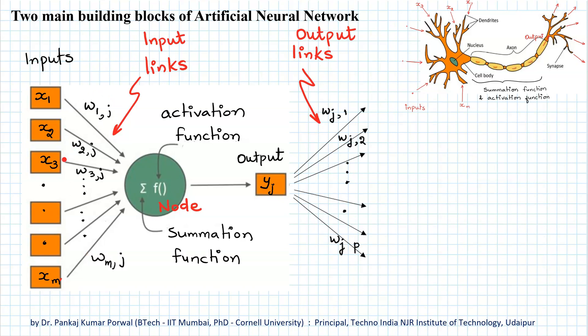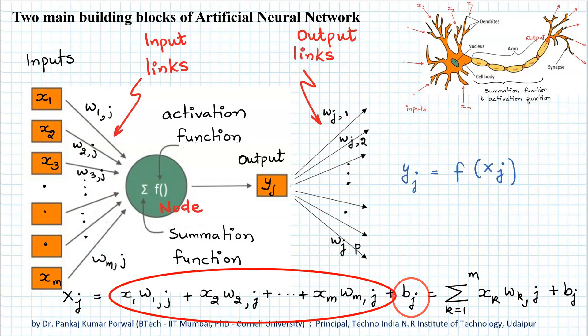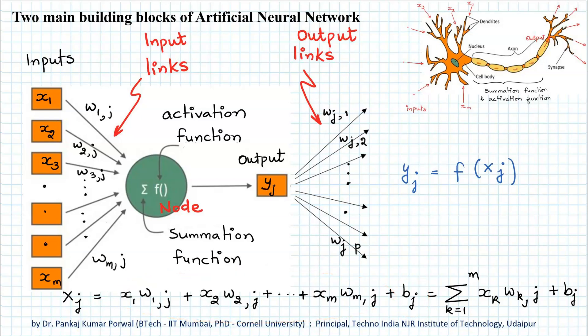The summation function combines inputs from all the nodes by taking the weighted sum of all the inputs, where the weights are the weights of the links. Note that a bias term bj is added to the weighted sum of inputs to the network, to make sure that even if the input to the network and the weights of the links are zero, the input to the activation function is non-zero. Therefore, each node in the hidden layers and output layer has a bias associated with it.